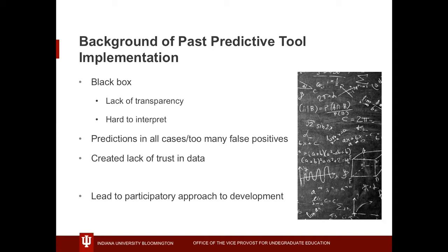In the past, we brought on a vendor product that had a predictive tool, and there were a lot of problems with that implementation. Part of it was the black box approach — advisors didn't trust what they saw and couldn't interpret it. Because there was a lack of transparency, it wasn't necessarily inaccurate, but advisors just didn't know how to translate it. Also, predictions were made for all students across all majors, and sometimes there wasn't really enough information to give a good prediction of whether a student would be successful.